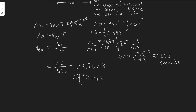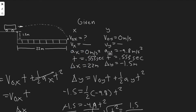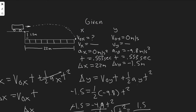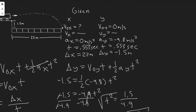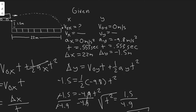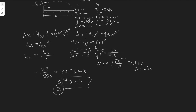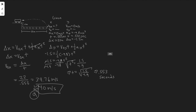So 40 meters per second is the answer to Part A. The rundown of how we did this: when you write down your given, write it in two separate columns for x and y. Then look at your y variables in order to solve for time. Notice time is a scalar quantity — it isn't bound to either direction — so you can use it in both equations. We used the time from the y equation and plugged it into the x equation to find the initial velocity.